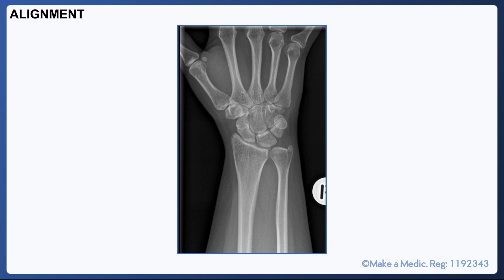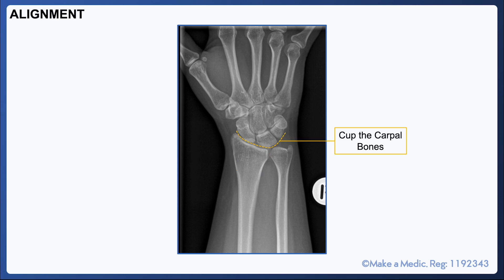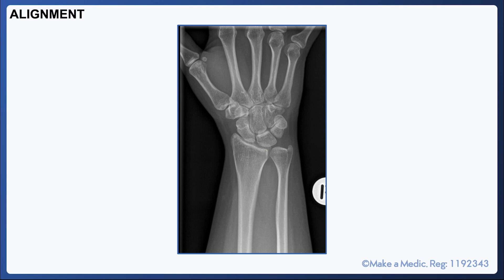There are a few key bony features to note when analyzing a wrist x-ray. First of all, the distal radius should have a smooth contour that you can clearly outline, and it should cup the carpal bones. The radial inclination is the slope of the distal radial articular surface relative to the radial shaft, and it should be about 15 to 25 degrees. The radial height should be around 8 to 14 millimeters.